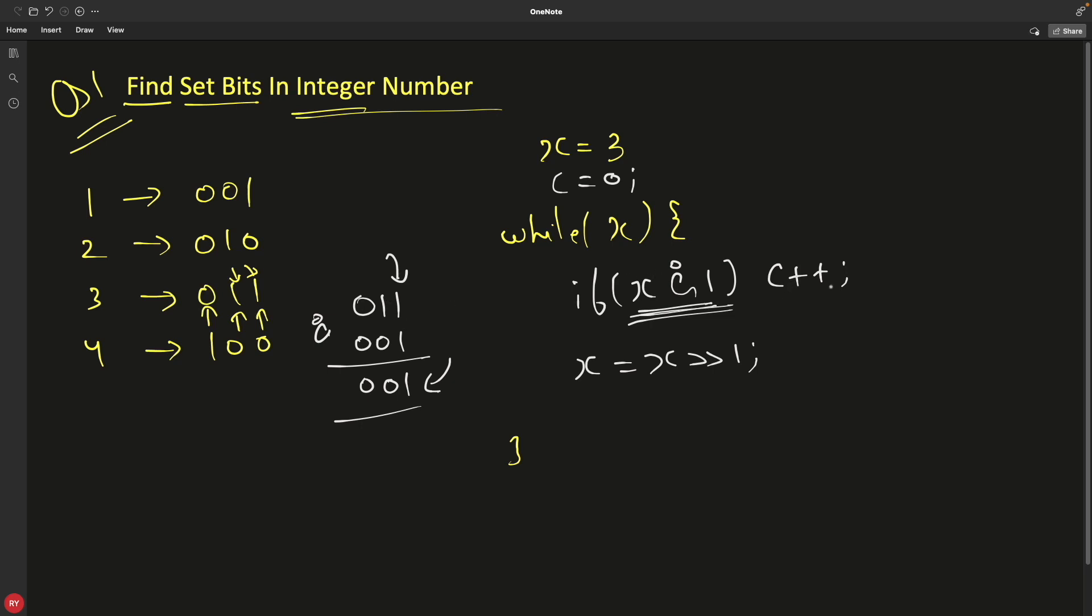So now you have counted that. I have found 1. And then what we do? We have done this right shift on this number. So this number is changed now. Now x is right shifted. So if 3, which is 1, 1, 0 is right shifted once, then the answer is 0, 0, 1. So now x is changed to 1 now with this.